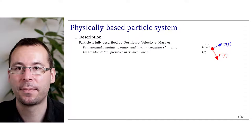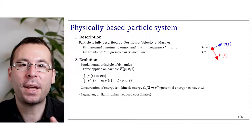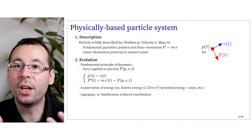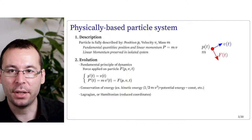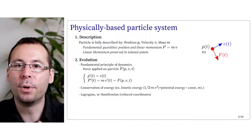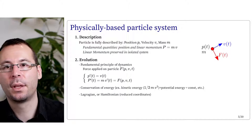Then we can look at the evolution principles. One of the more standard ways to express the evolution is the use of the fundamental principle of dynamics. For that we need the notion of force applied to the particle. In its general form, the force can depend on the position p, the velocity v, and the time t. The derivative of the position is the velocity, and the derivative of the linear momentum is the force f. In most cases the mass of the particle is constant along time, and so mass times the derivative of the velocity equals the force.